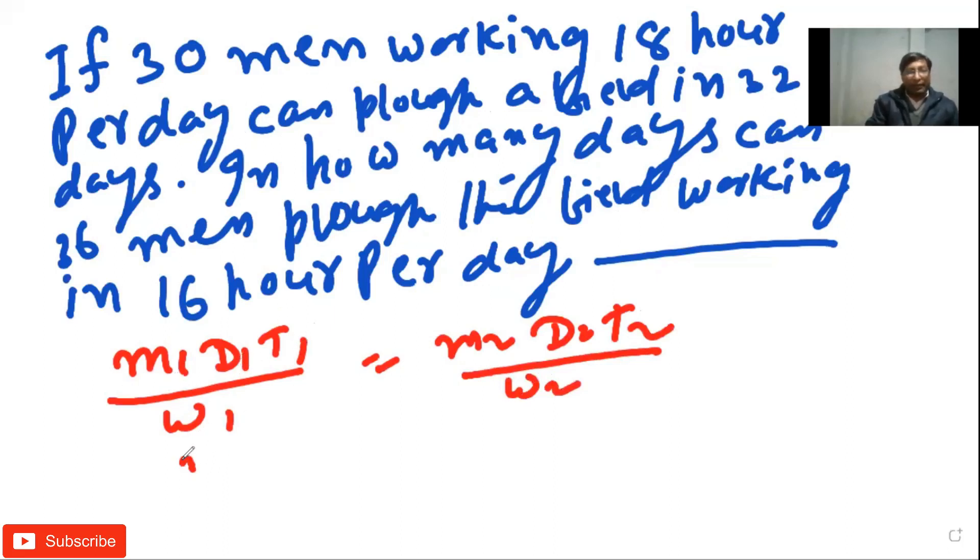Here we have 30 men, that's 30. Days given is 32 days, that's 32. And hours is 18. The work is the same field, so we put 1 here.